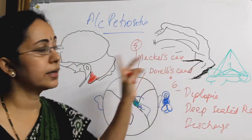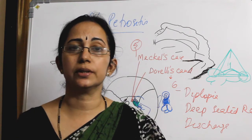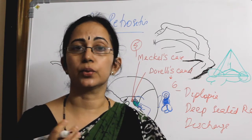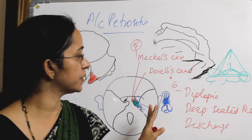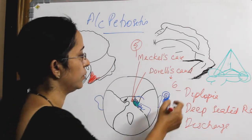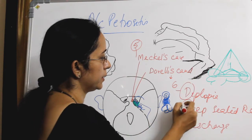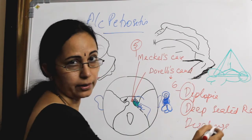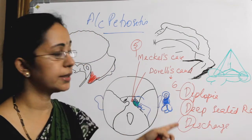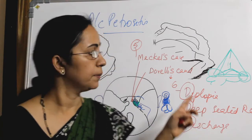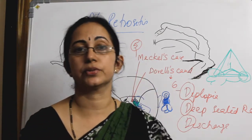Regarding petrous apicitis, the spread of infection and the clinical features are mainly the 3 Ds: diplopia, deep-seated retroorbital pain, and discharge. Remember the 3 Ds because of the involvement of Meckel's cave (5th nerve) and Dorello's canal (abducent nerve).